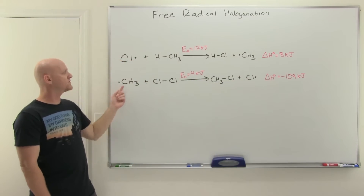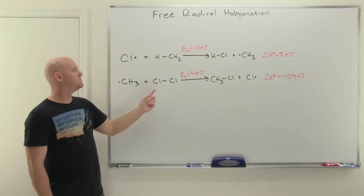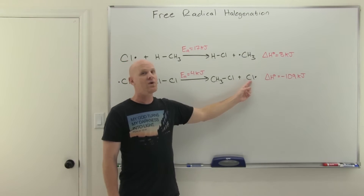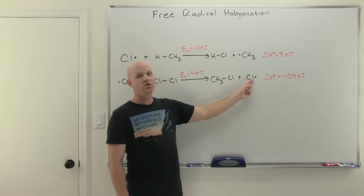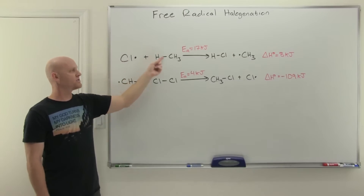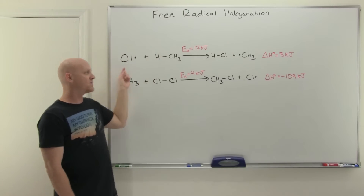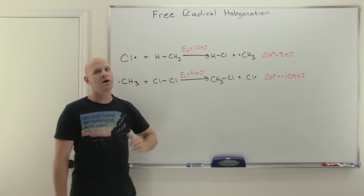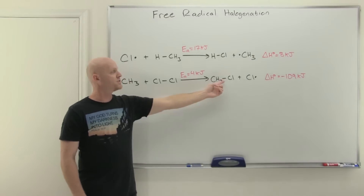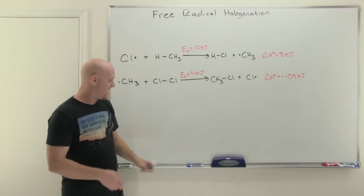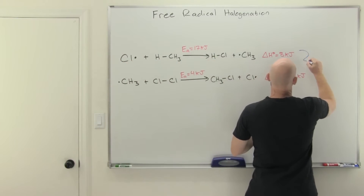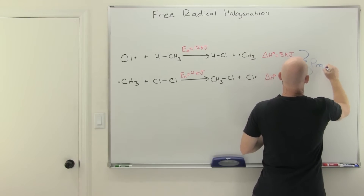That carbon radical is going to bump into a molecule of Cl2 and bond to one of the chlorines. The other chlorine is going to be left as a radical. That chlorine radical we produce in step two, along with our product, just goes back and finds another methane molecule to react with. We keep repeating these two steps over and over again, zillions of times, producing product every sequence. When two steps repeat over and over to form your product, we call them propagation steps.